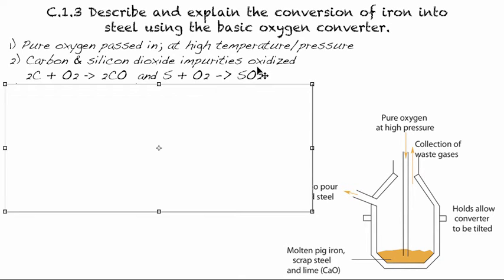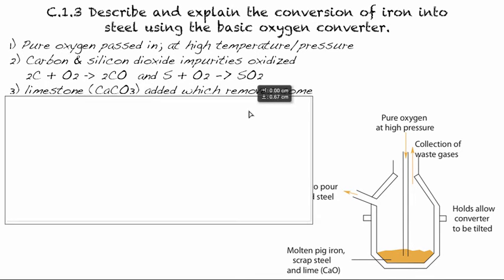Now, important to note that sulfur dioxide can then be further oxidized, and then it can help form our acid rain.